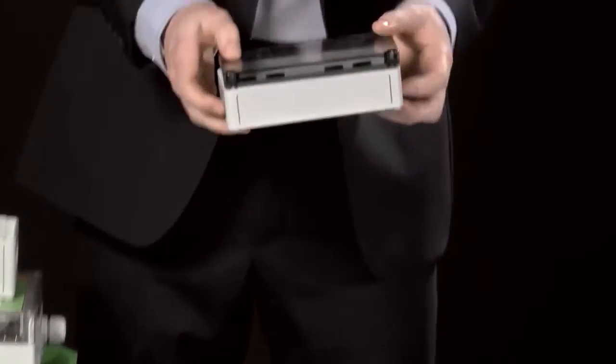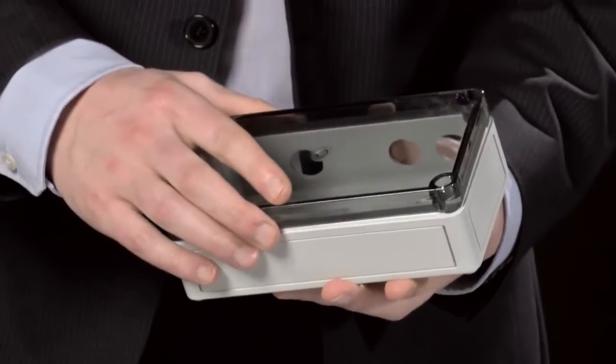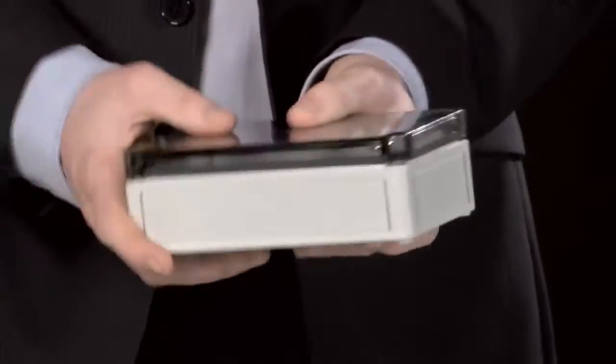Other ways you can use the lid to improve the performance of your enclosure is by offering a transparent option to your customers. This way they can check the internal connections, which is especially useful outside.